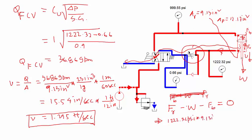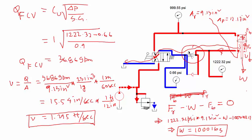The force at the rod end equals pressure times the rod-end area of 9.13 square inches. Subtracting W and the blank-end force — approximately 1000 psi times 12.17 square inches — I calculated W to be approximately 1000 pounds. So I can control a 1000-pound load. Let's say it's a fancy piece of equipment and I want to slowly lower it to the ground. I can restrict the flow control valve to reduce the extension speed.